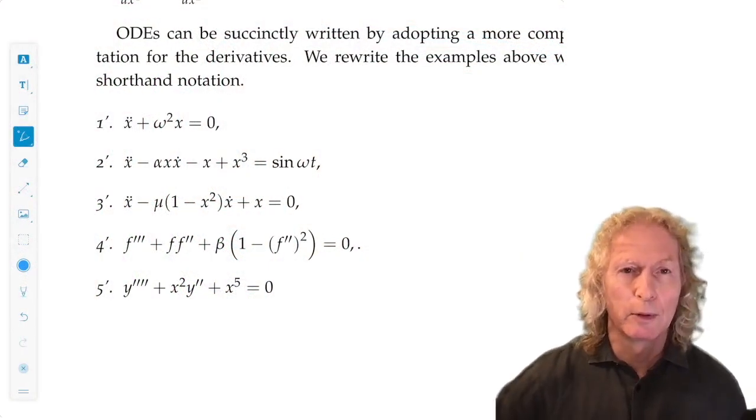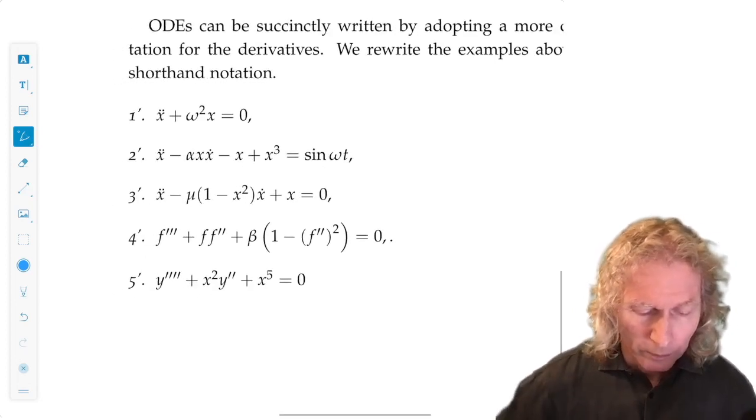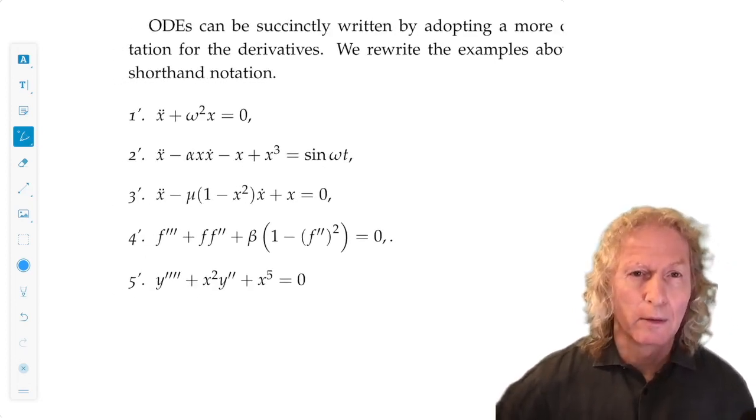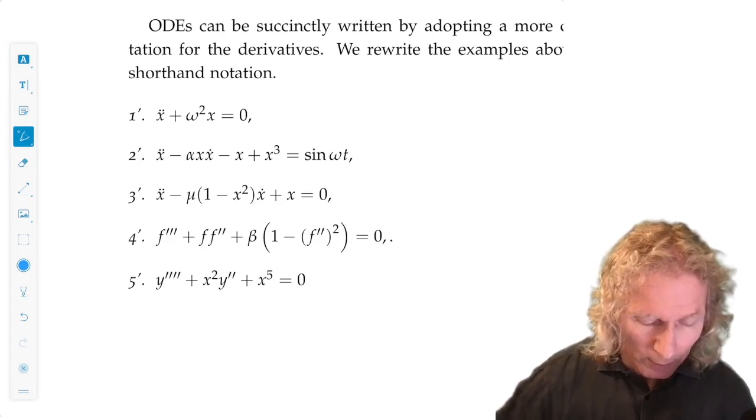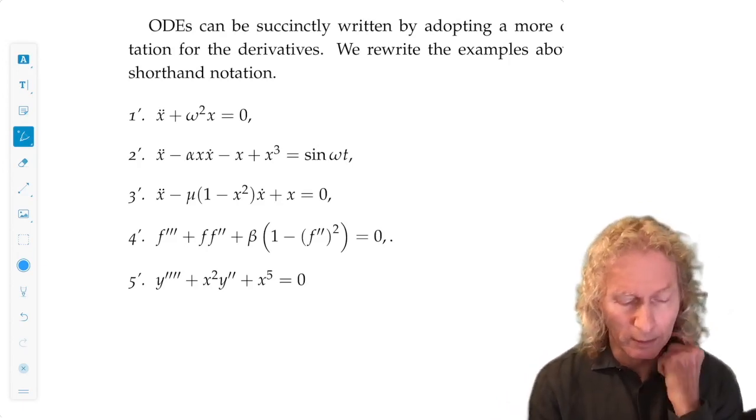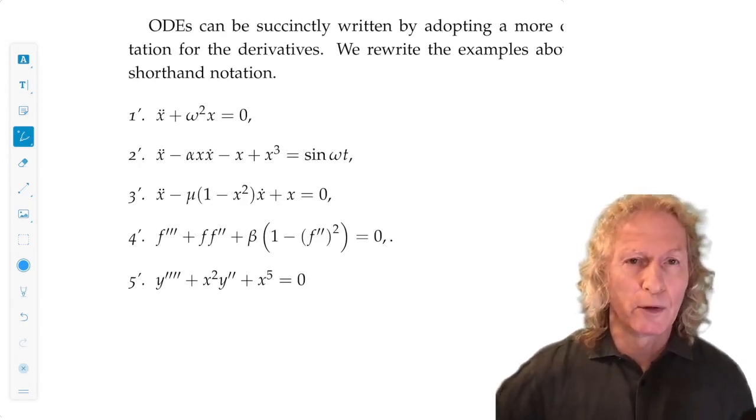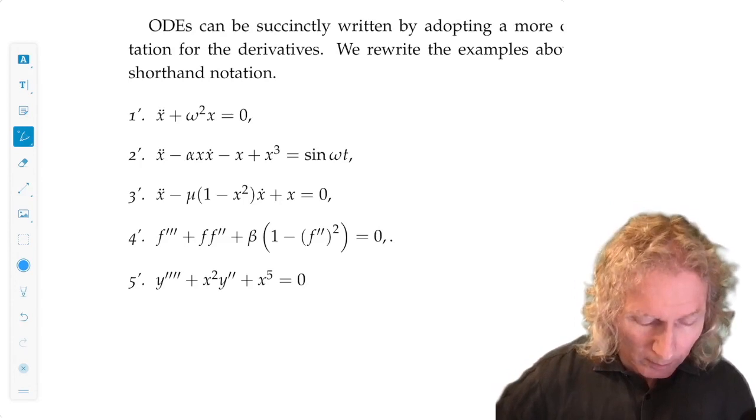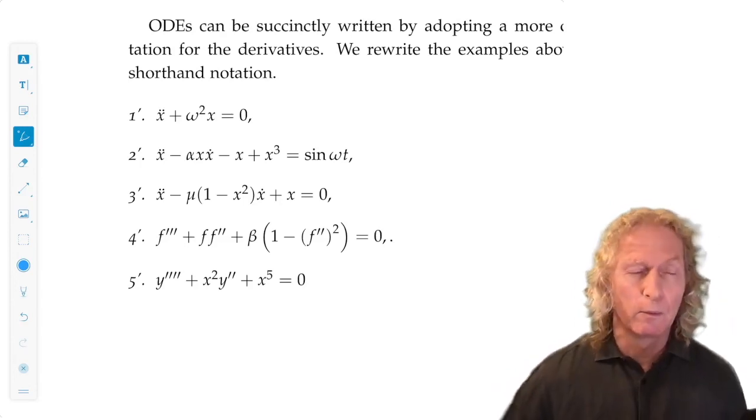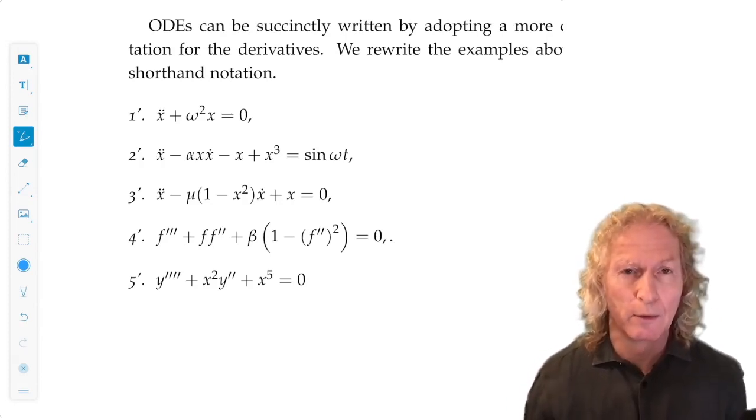Let's recall the examples that we looked at in the previous lecture. These are second order, 1, 2, and 3, third order, and fourth order ODEs, 4 and 5 respectively. Scalar means that the functions that solve these ODEs, x of t for 1, 2, and 3, f of eta, and y of x, are scalar valued functions of the independent variable.